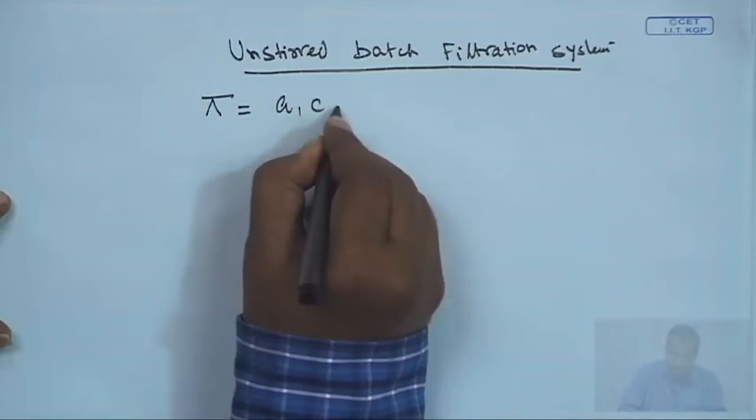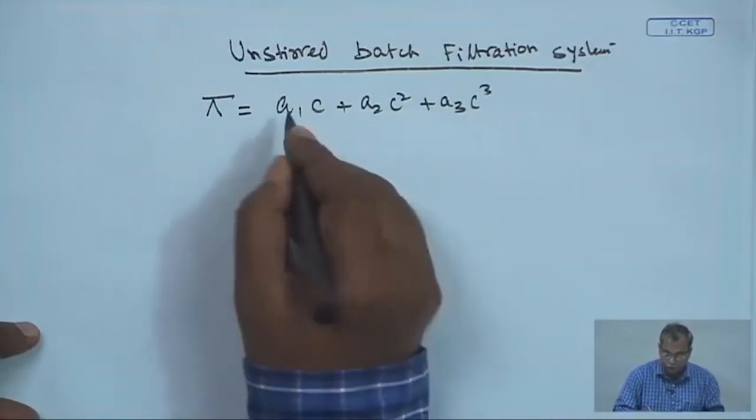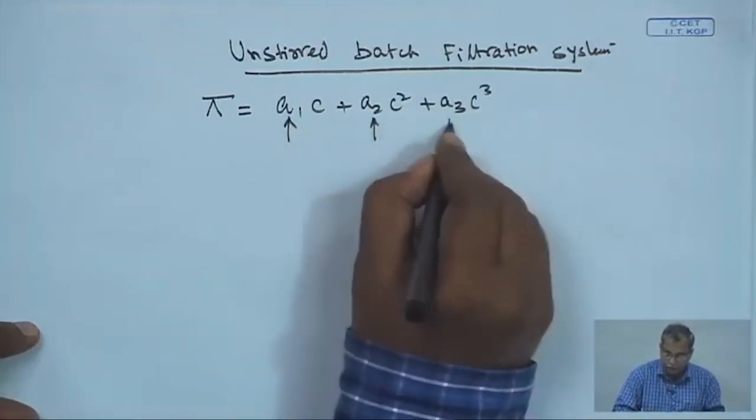Osmotic pressure of the solution — things like that. So what is generally done? One has to take an effective diffusivity and effective osmotic pressure with a variation of concentration — concentration may be in terms of total solids or total dissolved solids based on the system — and you will be having an effective osmotic pressure coefficient: a1·c plus a2·c² plus a3·c³. These a1, a2, a3 may be the effective coefficients of osmotic pressure.